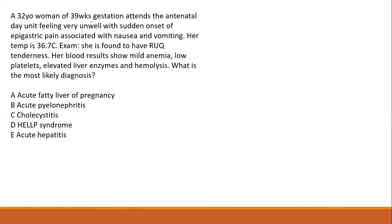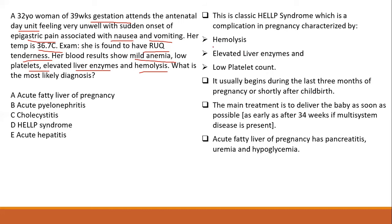A 32-year-old woman of 39 weeks gestation presents with sudden onset of epigastric pain, nausea, and vomiting. She has right upper quadrant tenderness. Blood results show mild anemia, low platelets, elevated liver enzymes, and hemolysis. This is HELLP syndrome — characterized by Hemolysis, Elevated Liver enzymes, and Low Platelet count. The main treatment is to deliver the baby as soon as possible. Your answer should be HELLP syndrome.